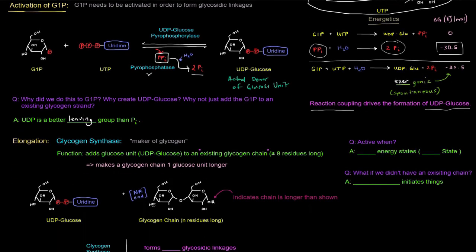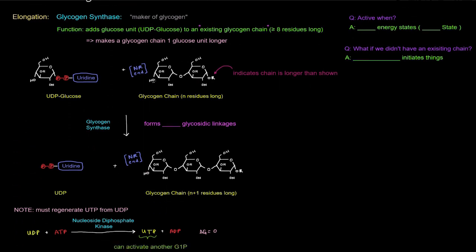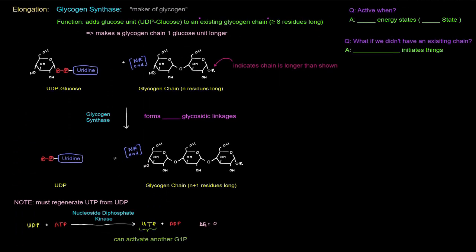So let's get into the enzyme that actually catalyzes glycogen synthesis. It's uniquely named glycogen synthase. So literally, quite literally, maker of glycogen. So what is its function? Well, it adds a glucose unit coming from UDP glucose. That's the actual glucose unit donor. It adds it to an existing glycogen chain. And that's actually an important piece of information. That existing glycogen chain is at least eight residues long. I'll get back to that detail momentarily. So just for clarification's sake, it adds a glucose unit and makes a glycogen chain one glucose unit longer.